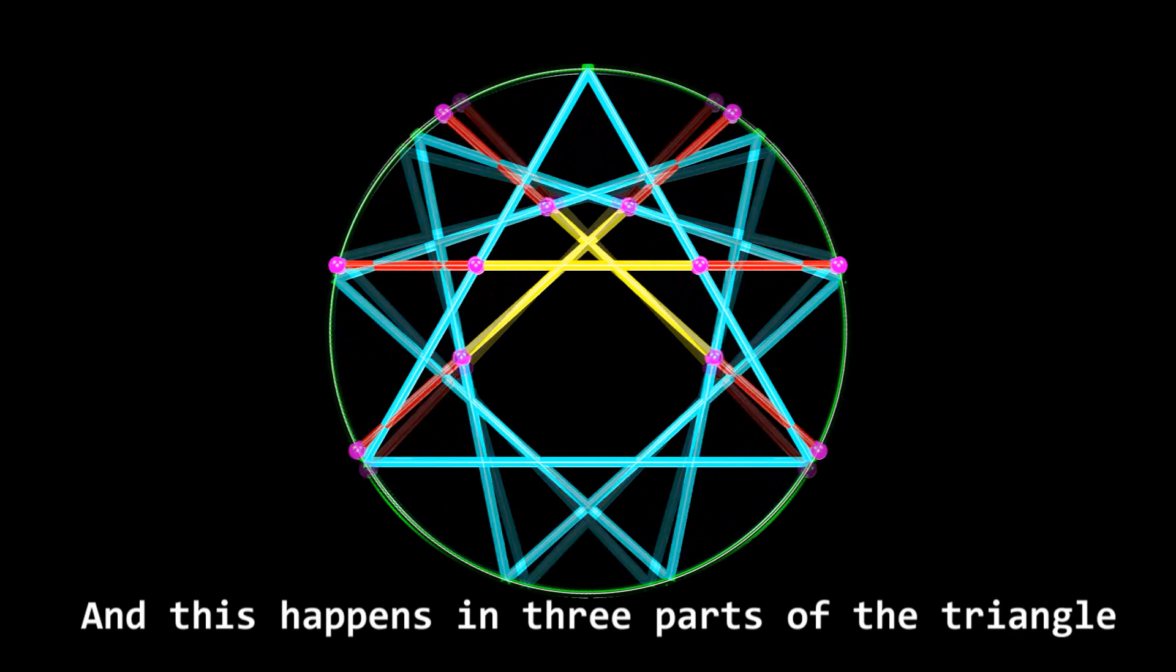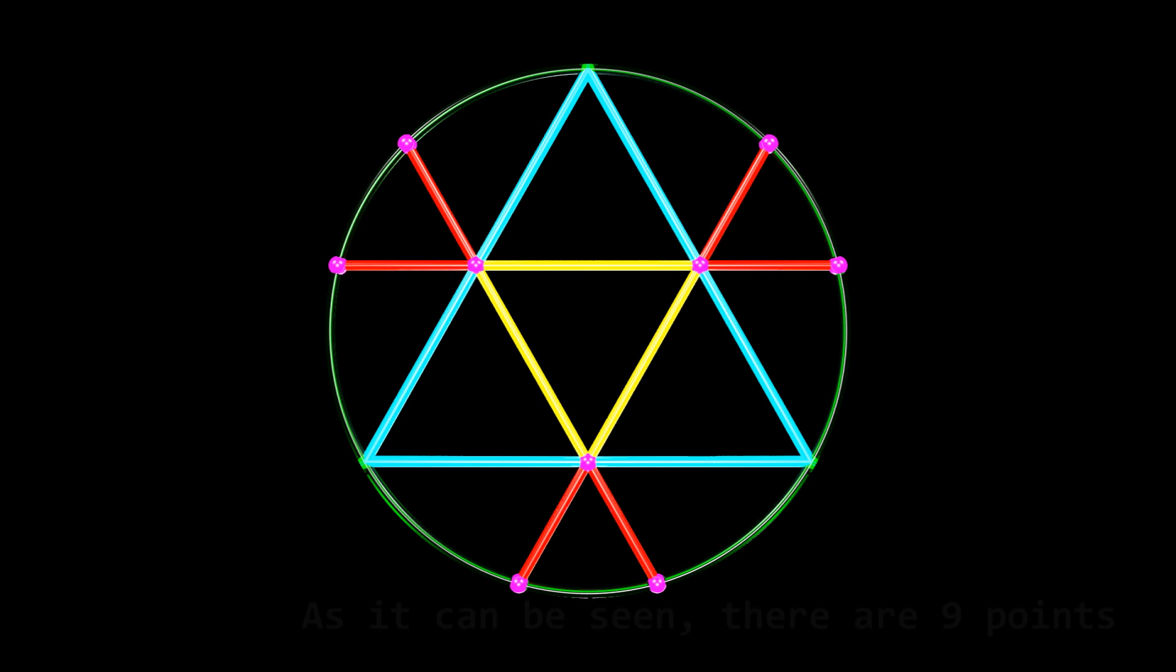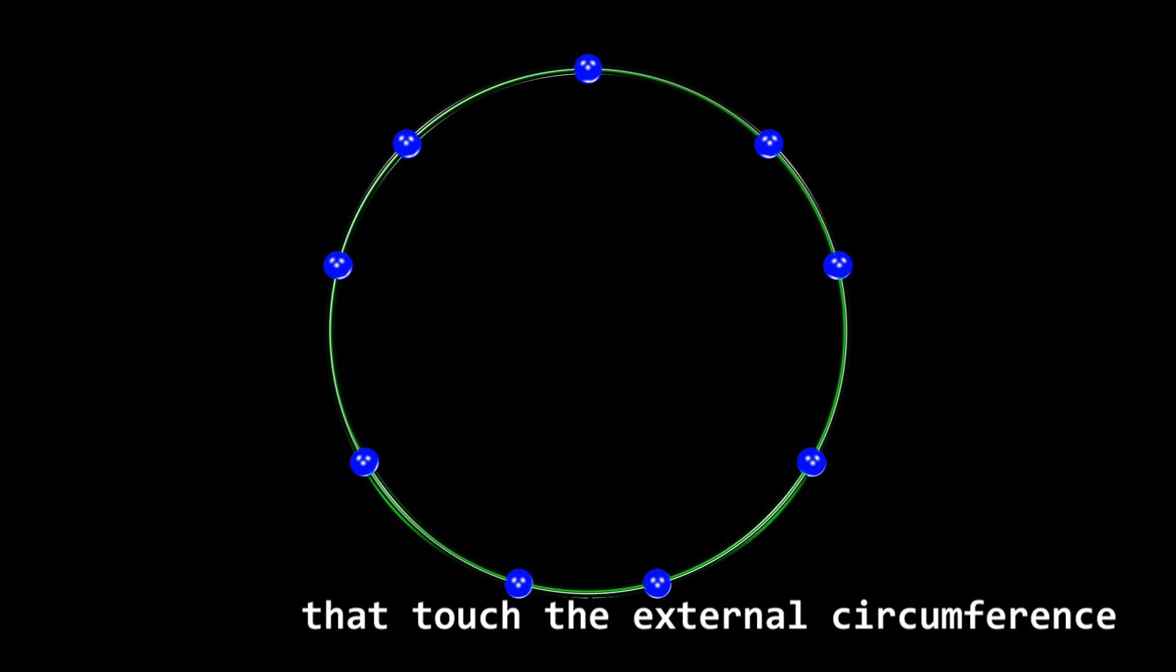And this happens in three parts of the triangle. As it can be seen, there are nine points that touch the external circumference.